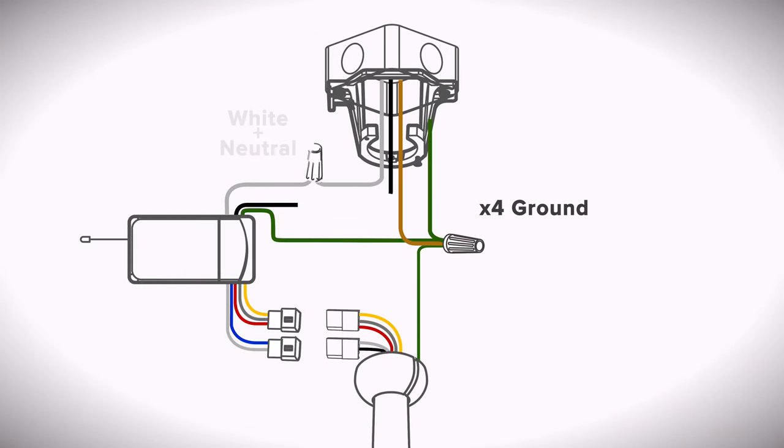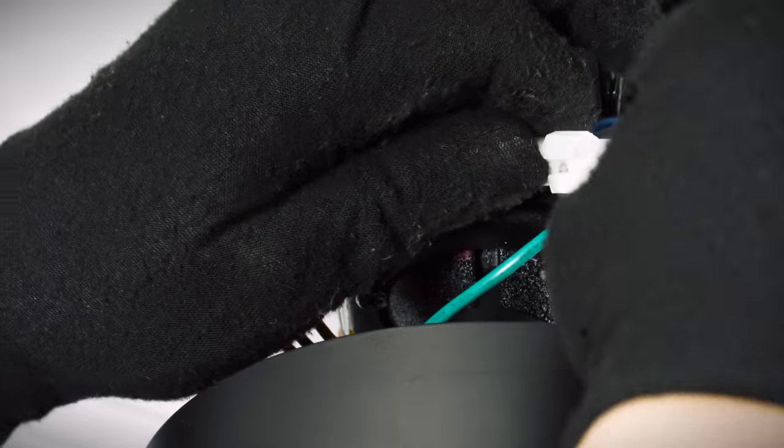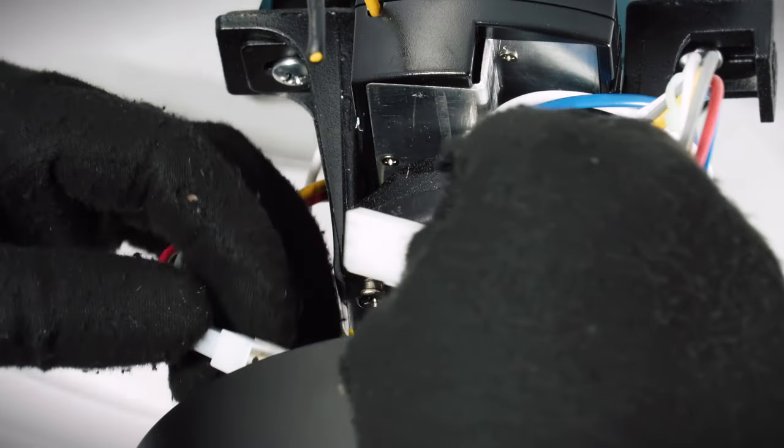Combine the white wire from the receiver with the neutral wire from the outlet box. Combine the black wire from the receiver with the hot wire from the outlet box. Connect the two pin wire connectors from the receiver and the fan together. Connect the three pin wire connectors from the receiver and the fan together.